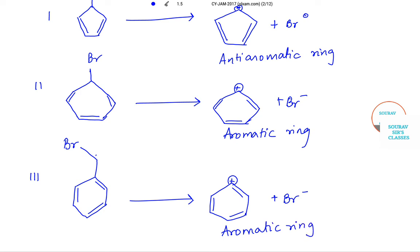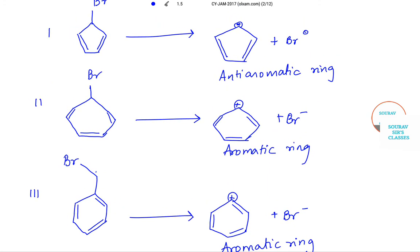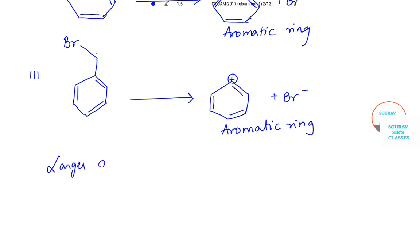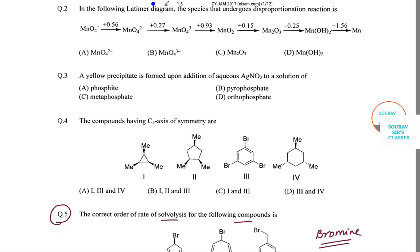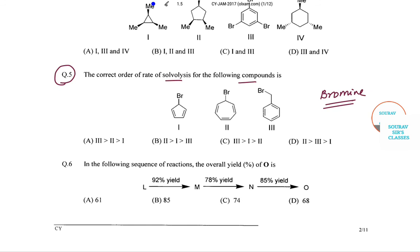What we see is very interesting: a larger size aromatic ring is more stable than a smaller size aromatic ring. Therefore, the stability order of aromatic rings will be 2 greater than 3 greater than 1. Hence, the rate of solvolysis is given by option number D. Let us move on to question number 6.